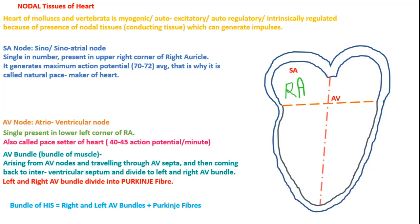As we are reading, we start with the SA node — the sino-atrial node. This is the first one. You can see it here — it is located in the upper right corner of the right auricle.